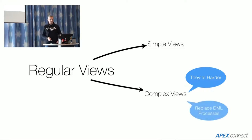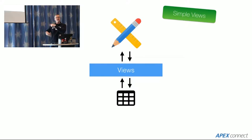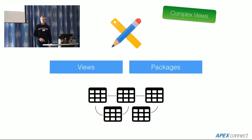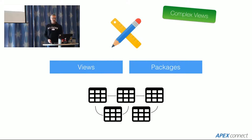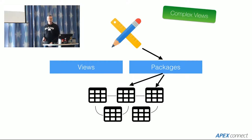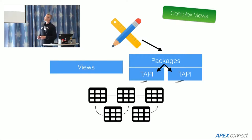With DML it gets a bit more complicated. There are two kinds of views: simple views and complex views. The simple views are easy — instead of pointing to a table you point to the view and it's all good. The complex views are harder because you have to write your own DML processing. With a complex view you might have a view that joins a couple of tables or has aggregates, so when you write back you call a package which does its magic on the tables. Or you can break it up further where you call a package which calls table APIs which call individual tables.